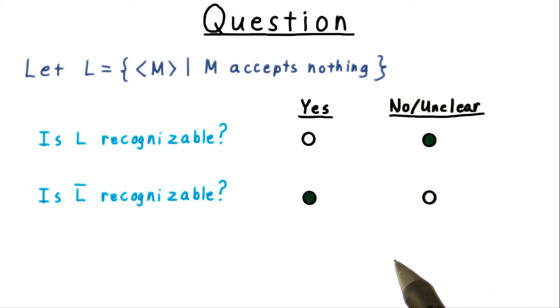This is a real problem, because we can't just run M on the empty string, and then run it on the 0 string, and so forth. The computation on the empty string might never halt. The solution is essentially to run all these computations in parallel.